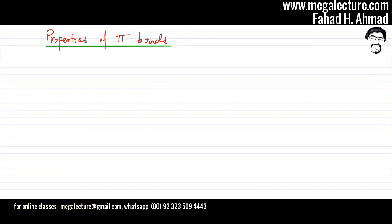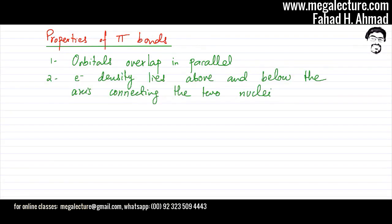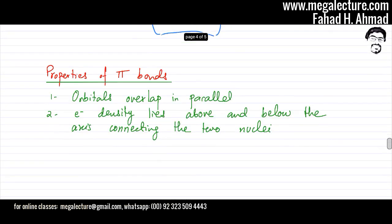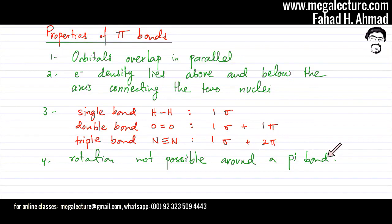Properties of pi bonds: First, the orbitals overlap in parallel — not end-to-end as in sigma bonds. Second, electron density lies above and below the axis connecting the two nuclei. Third: single bond = sigma; double bond = one sigma + one pi; triple bond = one sigma + two pi. Fourth, rotation is not possible around a pi bond — the molecule is locked in position.